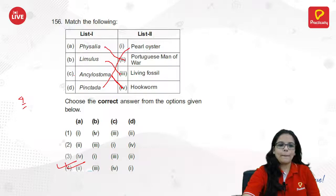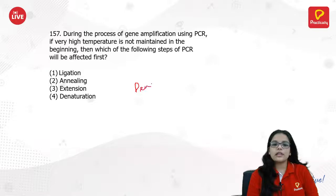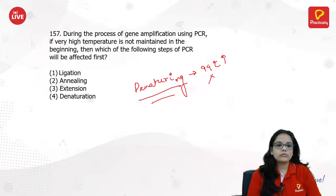Limulus is a living fossil. During PCR, if very high temperature is not maintained in the beginning, which step will be affected? Denaturation needs high temperature to break the bonds in DNA and separate the strands — you need 94°C or above. So if high temperature is not maintained, denaturation will be affected.